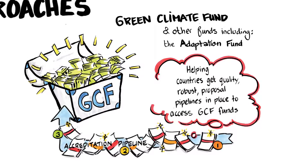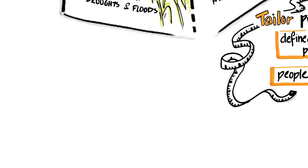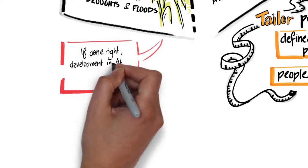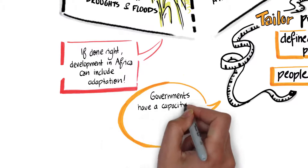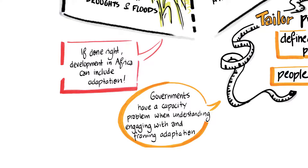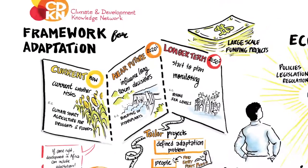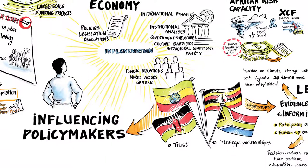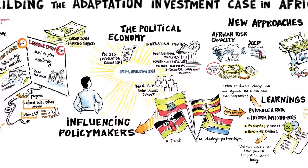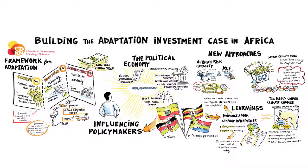With the right investments, a significant opportunity exists in Africa to build adaptation measures directly into new infrastructure developments, often at little additional cost. Experience shows that governments often struggle to engage with adaptation, as it is seen as an unknown future economic burden that contrasts with immediate development priorities. By identifying short, medium and longer term actions, and better understanding the political economy of decision making, we can support policymakers in building more resilient communities that benefit from development now and ensure that gains will continue in the face of changing climate conditions.